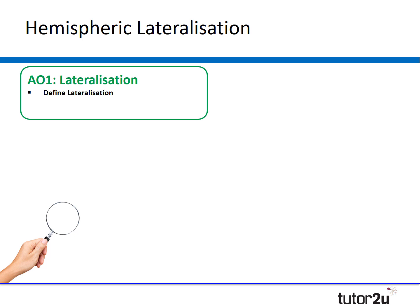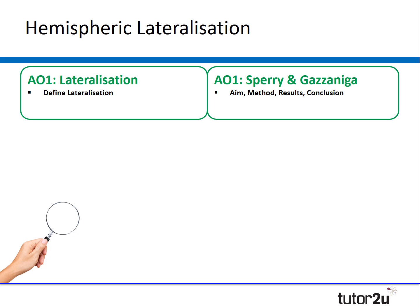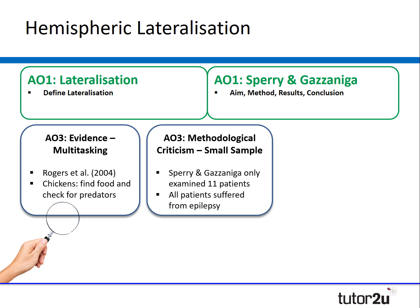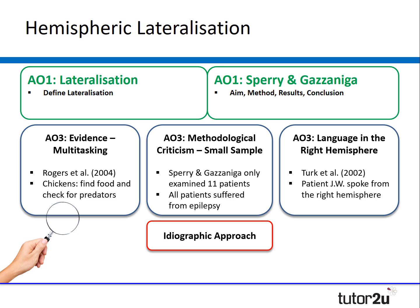If I was going to plan or structure this essay I would use the following structure. For my AO1 I would start by defining lateralisation, then outline the key research by Sperry and Gazzaniga focusing on aim, method, results, and conclusion. For AO3 I would include three evaluation points: evidence on multitasking, a methodological criticism on small sample size — which also allows me to draw on the idiographic approach from issues and debates — and further evidence that the right hemisphere can also be specialised for language, drawing on a case study.